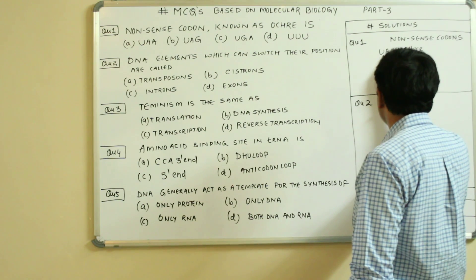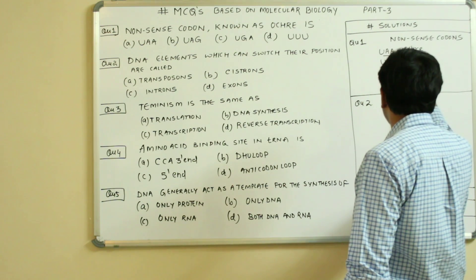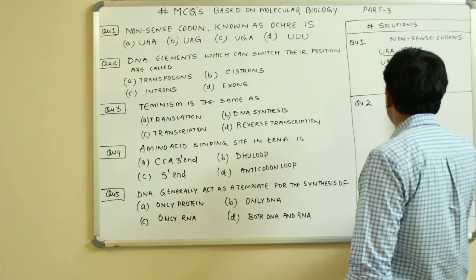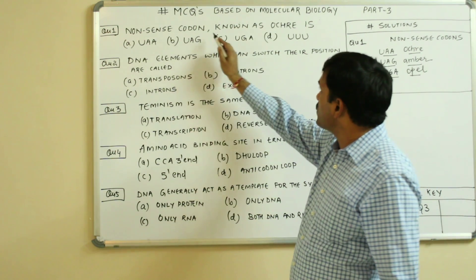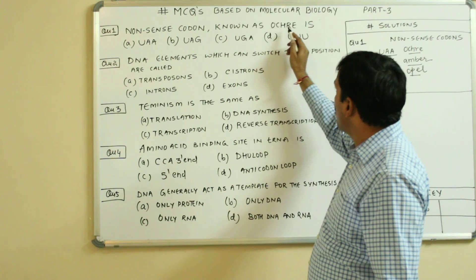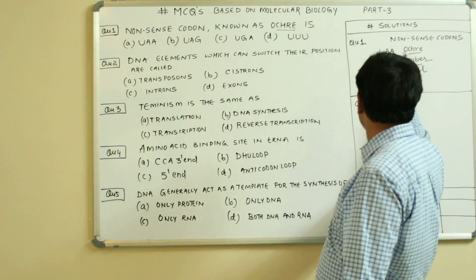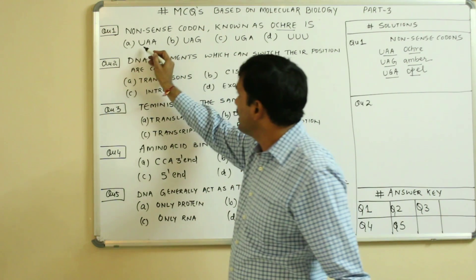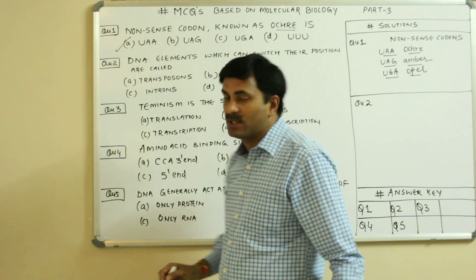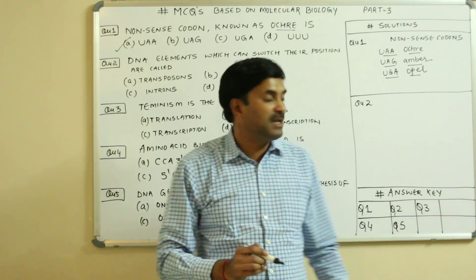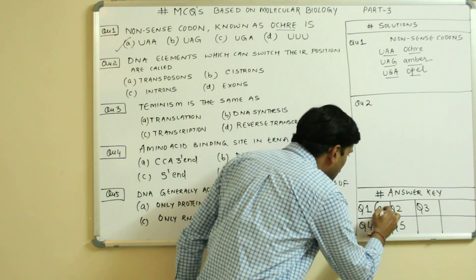So the nonsense codons are UAA, UAG, UGA — Ochre, Amber, and Opal. The nonsense codon known as Ochre is UAA. So question number one is having the answer A.